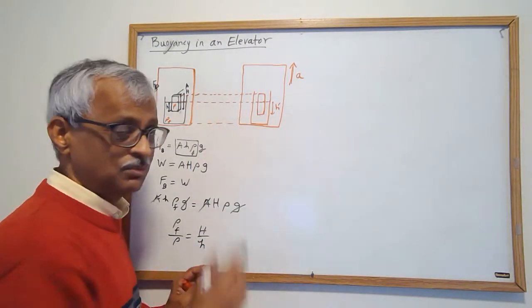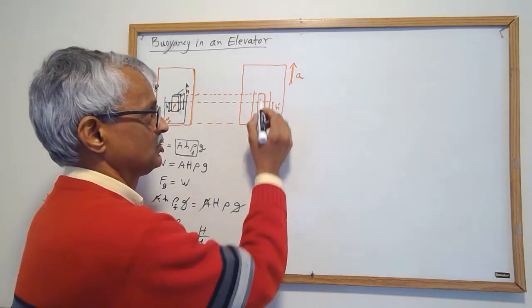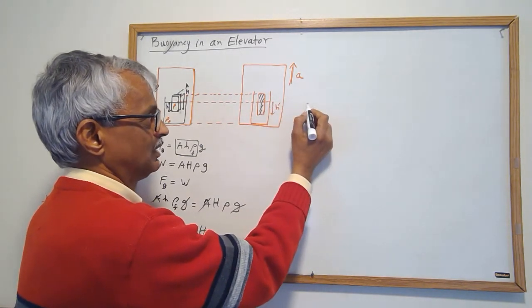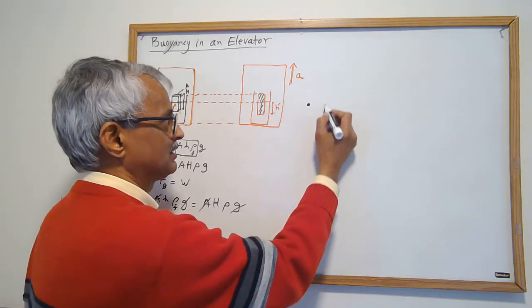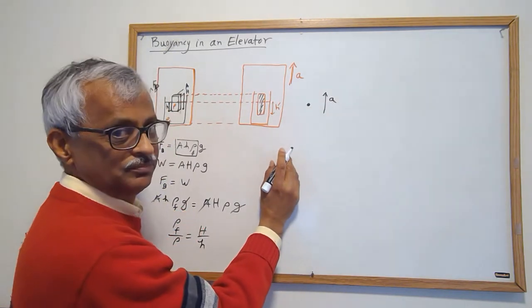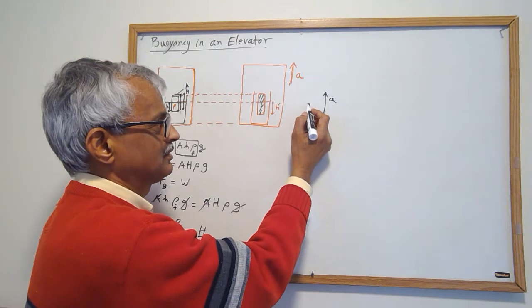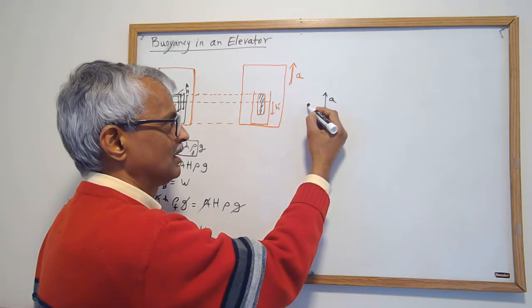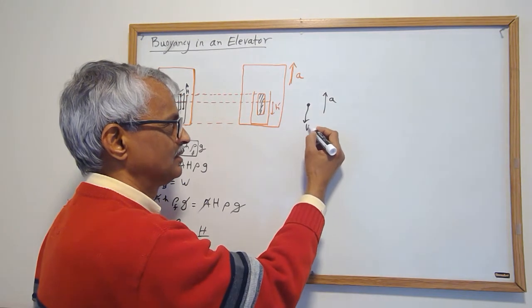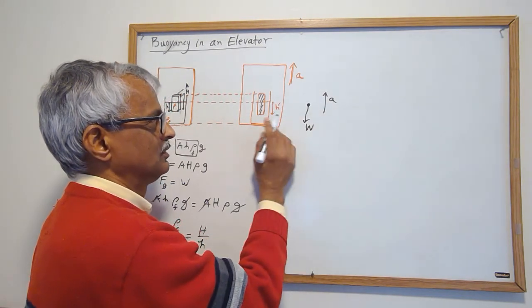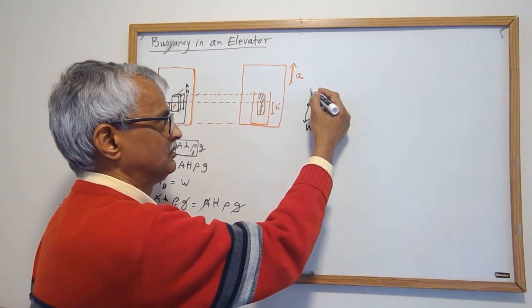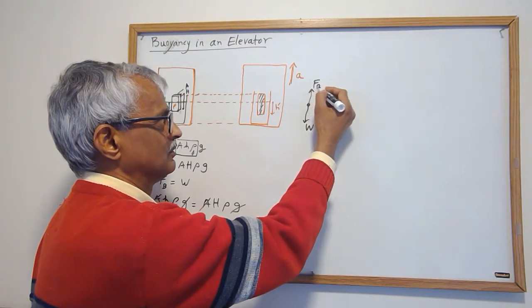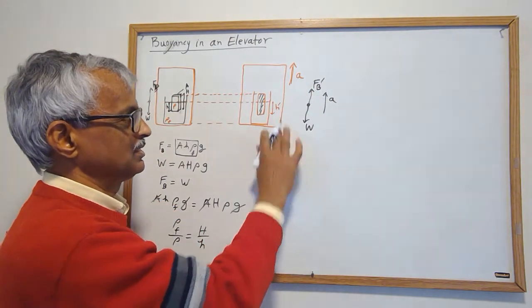So here's my block and set up F equals ma. The acceleration is up, it's got some mass, so mass times acceleration will go there, and then its weight is there.